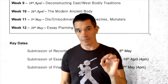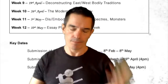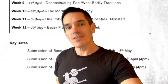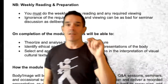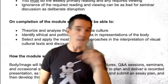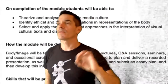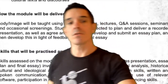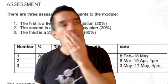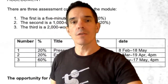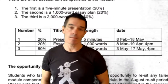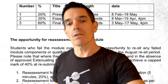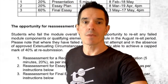Three pieces of assessment: 20% presentation at five minutes; 20% essay plan at 1000 words total; final essay at 60%, which is just the written part — the bibliography could add more words depending on how many sources you use. If you fail the module, you can resubmit and the assessment is the same — presentation, essay plan, final essay — some or all of them depending on the extent of your needing to resubmit.